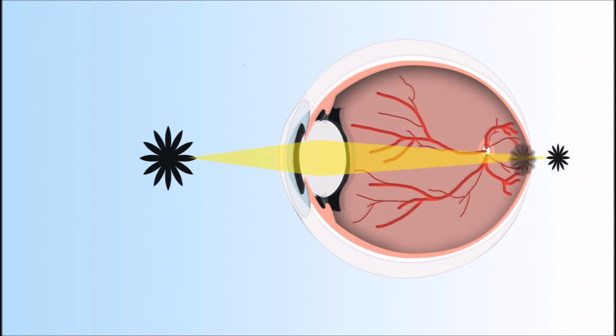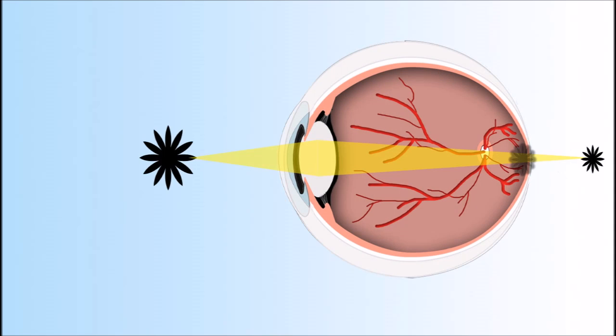The older individual needs help to refocus images up close, which is accomplished by using bifocal or reading glasses. These convex lenses refocus the image with clarity back onto the retina. Presbyopia is best corrected with glasses and contact lenses and is commonly diagnosed and treated by an optometrist.